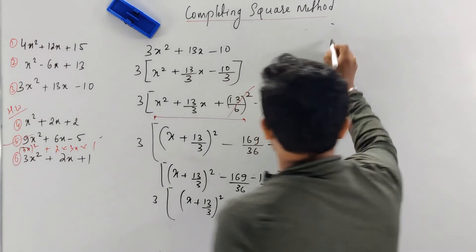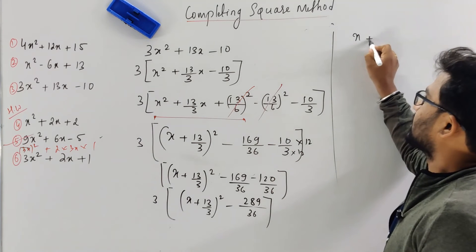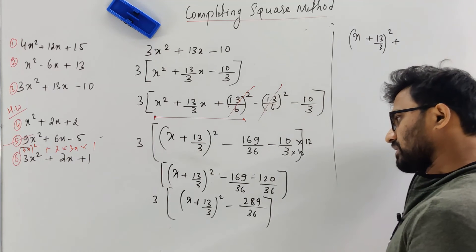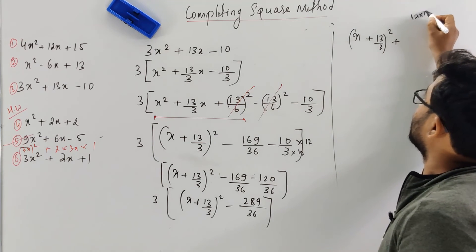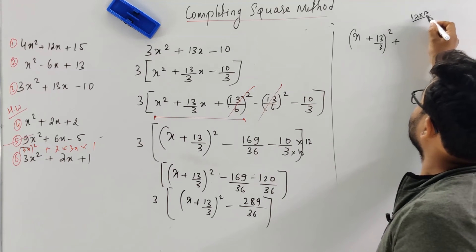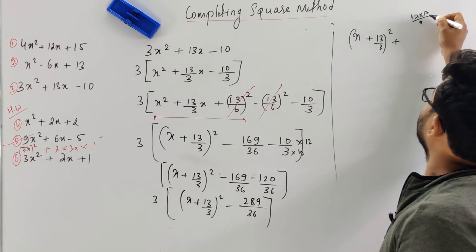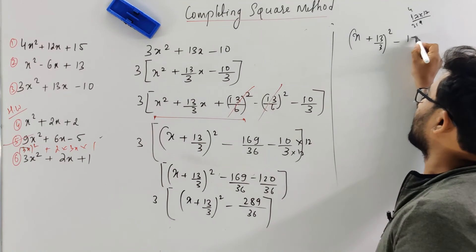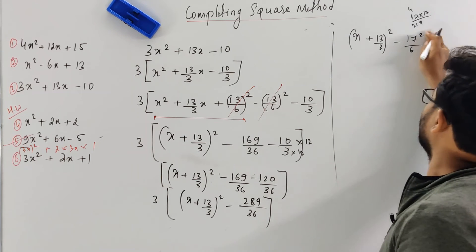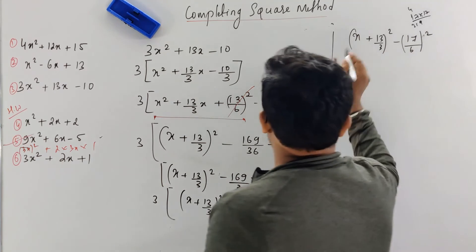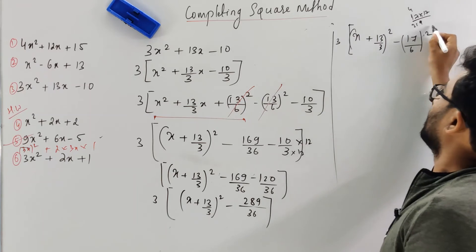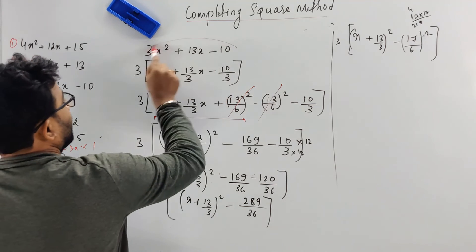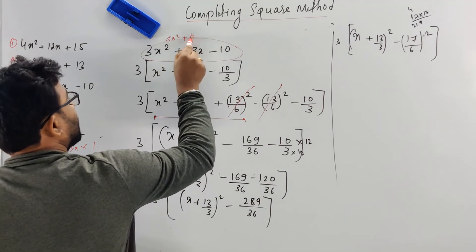So you have (x + 13/6) whole squared, then this minus, then multiply with 3. So the answer: you want to write it in the form of (x + 13/3) squared plus something. You will get minus (17/6) squared, so the answer is 3 into (x + 13/6) whole squared minus (17/6) whole squared. In integration, you have the question in the format ax squared plus bx plus c, and you have to convert that into the format x squared minus a squared, or x squared plus a squared.